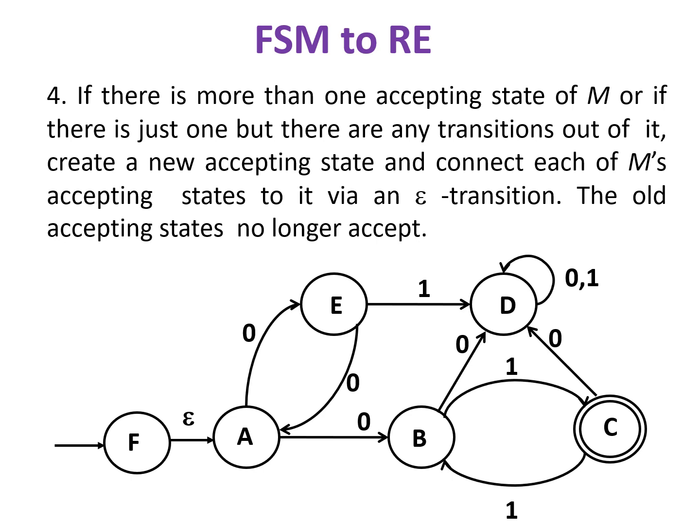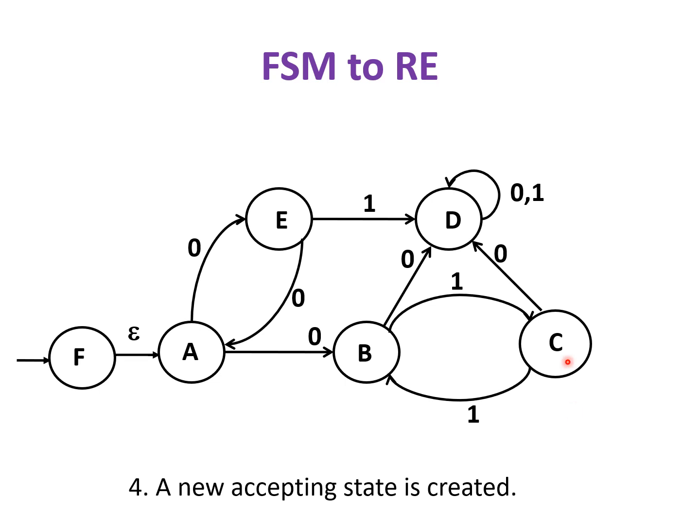In the fourth step of the algorithm, if there are more than one accepting state, or if there is just one but there are any transitions out of it - you can see here we have a transition 0 to D from C and even transition 1 to B - then create a new accepting state. Connect all the accepting states to it via epsilon transition and the old accepting states will no longer be the accepting states. So as per this step, C is no longer an accepting state. We create a new accepting state G and connect C with G via epsilon transition.